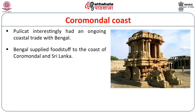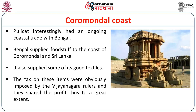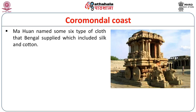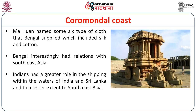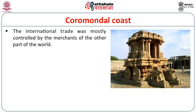Pulikat had an ongoing coastal trade with Bengal. Such localised trades were also a feature that benefited local powers operating in that system, and the Bengal rulers along with Vijayanagara Empire rulers benefited from such trade. Bengal supplied foodstuff to the Coromandal coast and Sri Lanka and also supplied some fine textiles produced in Bengal. Mahuan named some six types of cloths that came from Bengal, including certain silk and cotton varieties. Bengal also had a relationship with Southeast Asia operating through the Coromandal coast. Indians had a great role in shipping within the waters of India and Sri Lanka but to a lesser extent to Southeast Asia, as international trade was mostly controlled by merchants from other parts of the world.